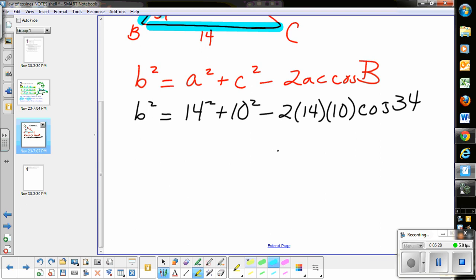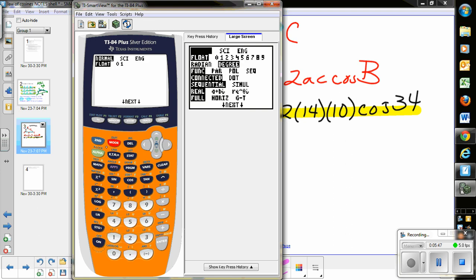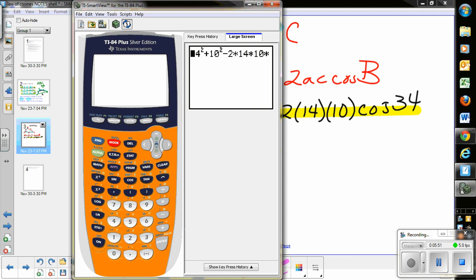From this point across this line, everything is numerical, so I can plug it into my calculator. I'll type in exactly what we had: 14² + 10² - 2 × 14 × 10. I need to check my mode—I'm in degree mode, which is what I want because it's cosine of 34 degrees, not 34 radians. So cosine of 34.